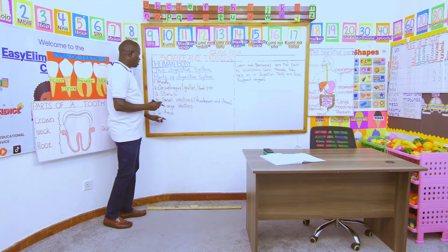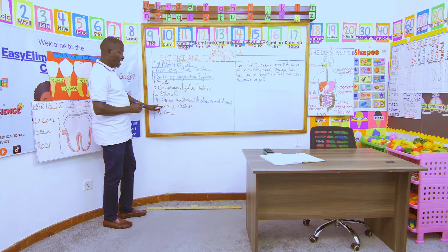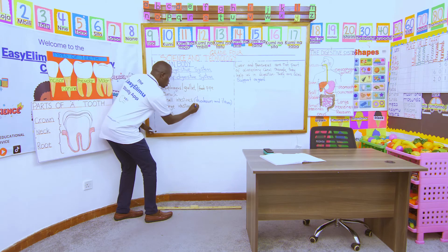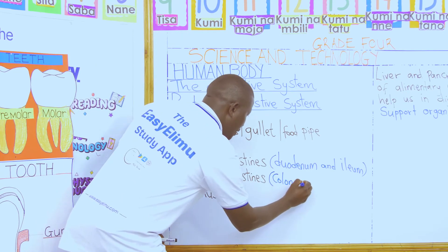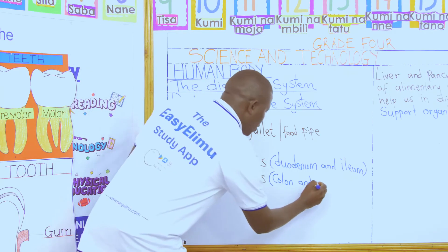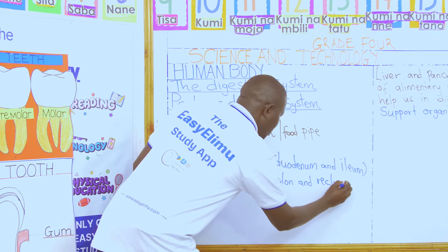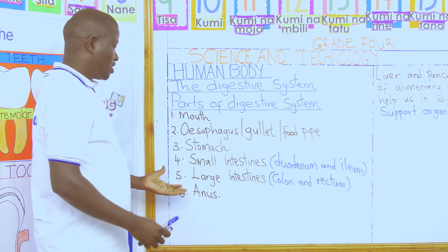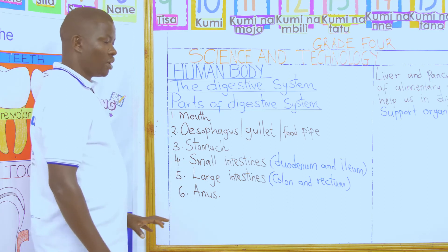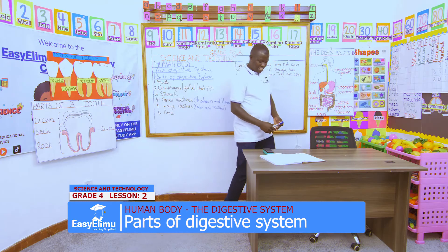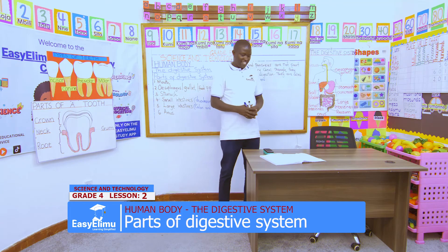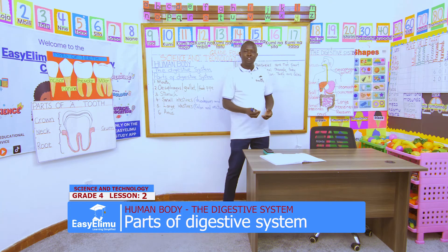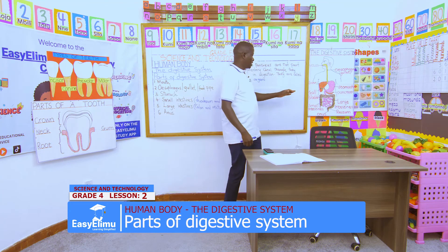Those are the two parts of the small intestines. Then the undigested and unabsorbed food goes down to the large intestines, which are also divided into two: the major part called the colon, and the temporary storage of undigested food called the rectum. After that, all the undigested and unabsorbed food goes out of our body through the anus.